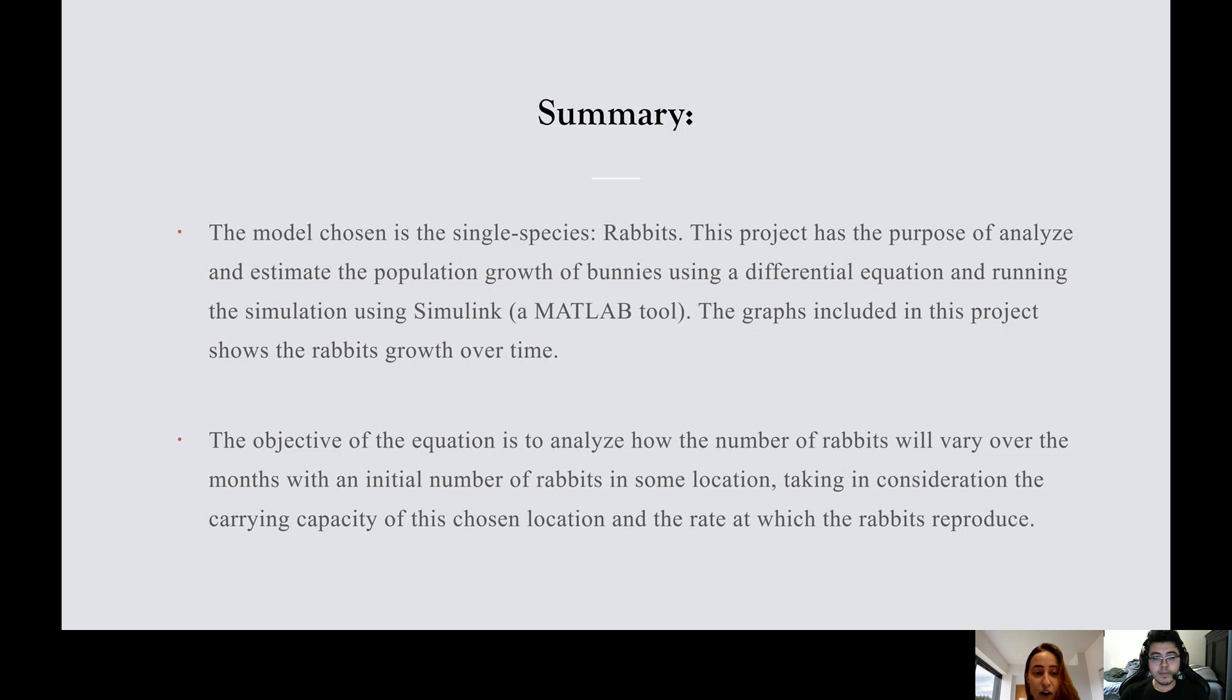For the results we included graphs so you can have a better understanding for each case. The graphs included in this project show the rabbit growth over time. The objective of the equation is to analyze how the number of rabbits will vary over the months with the initial number of rabbits in some given location, taking into consideration the carrying capacity of this chosen location and the rate at which the rabbits reproduce.